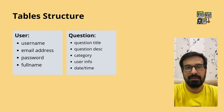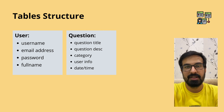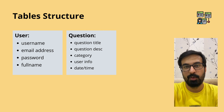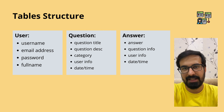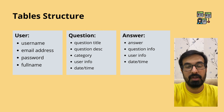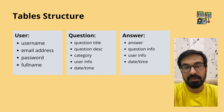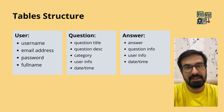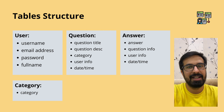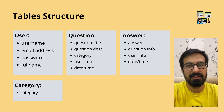In the question table we'll have a question title, a question description, the category, who asked the question (holding user information), and when the question was asked. In the answer table we'll have the answer text, the question information for which the answer was provided, the user who answered, and when the answer was submitted. The category table will simply have the name of the category.